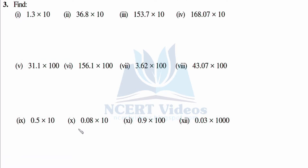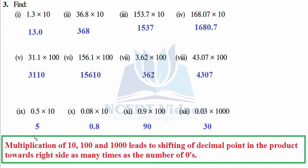Third question: find 1.3 × 10, 36.8 × 10, 153.7 × 10, and the rest. In this chapter you have learned that multiplication by 10, 100, and 1000 leads to shifting of the decimal point in the product towards the right side as many times as the number of zeros appear. So for 1.3 × 10: forget the decimal, multiply 13 × 1 is 13. Number of zeros is only 1, so shift one time — therefore the result is 13.